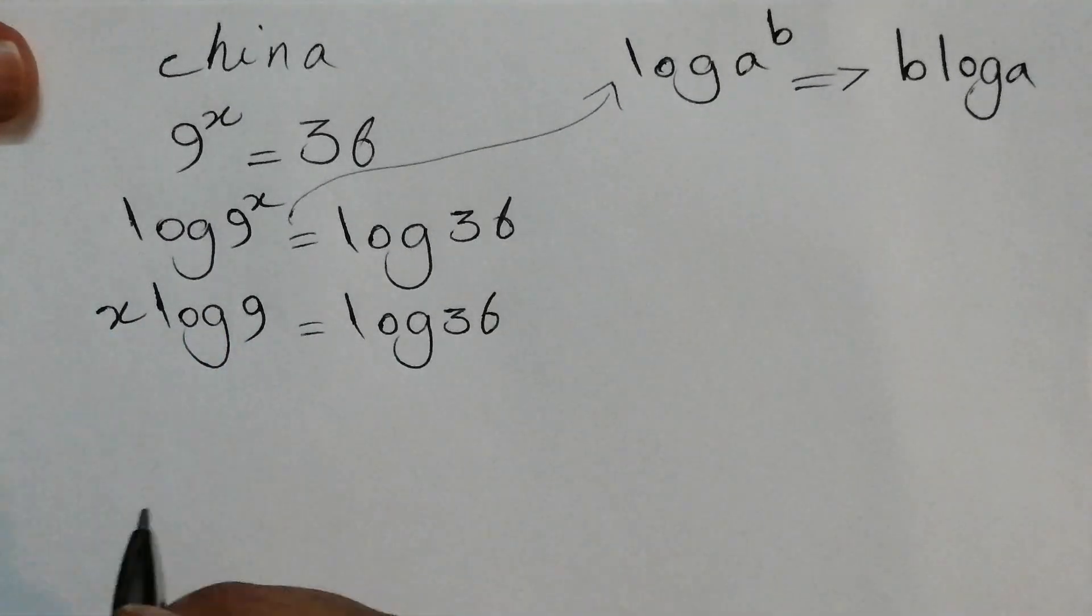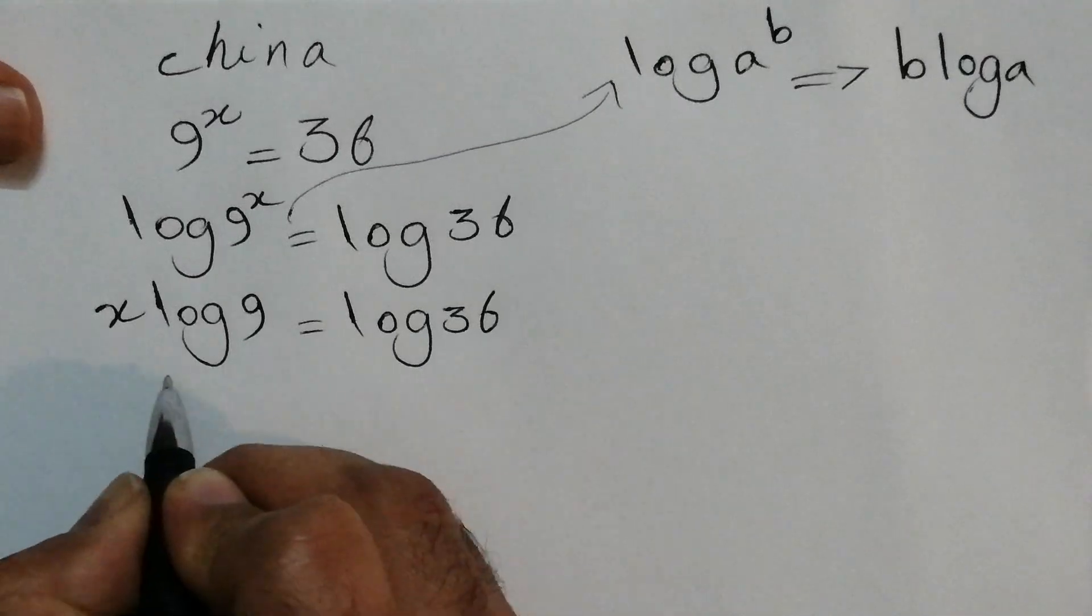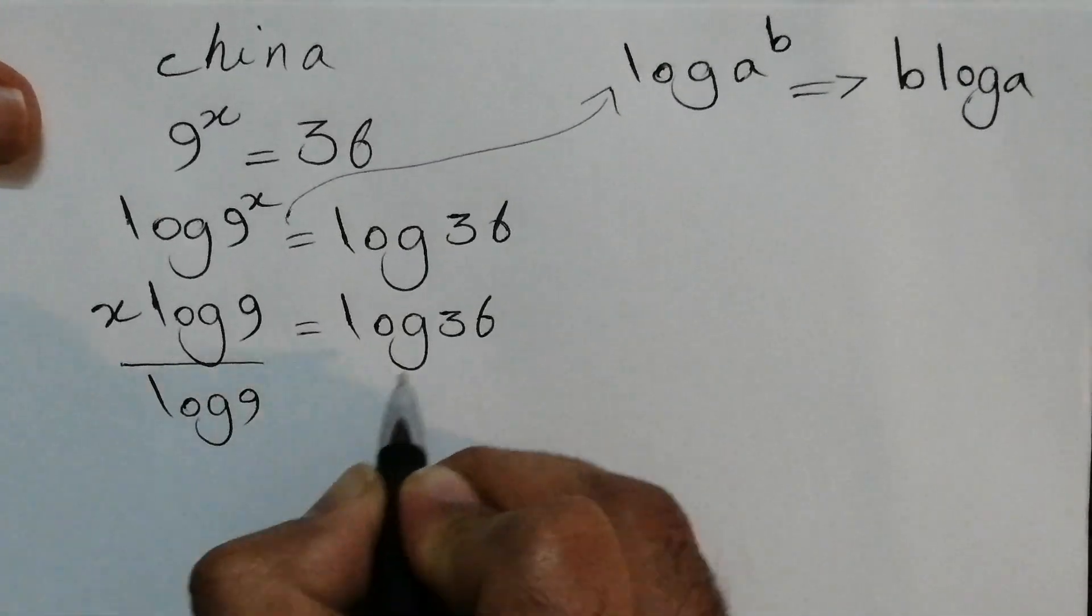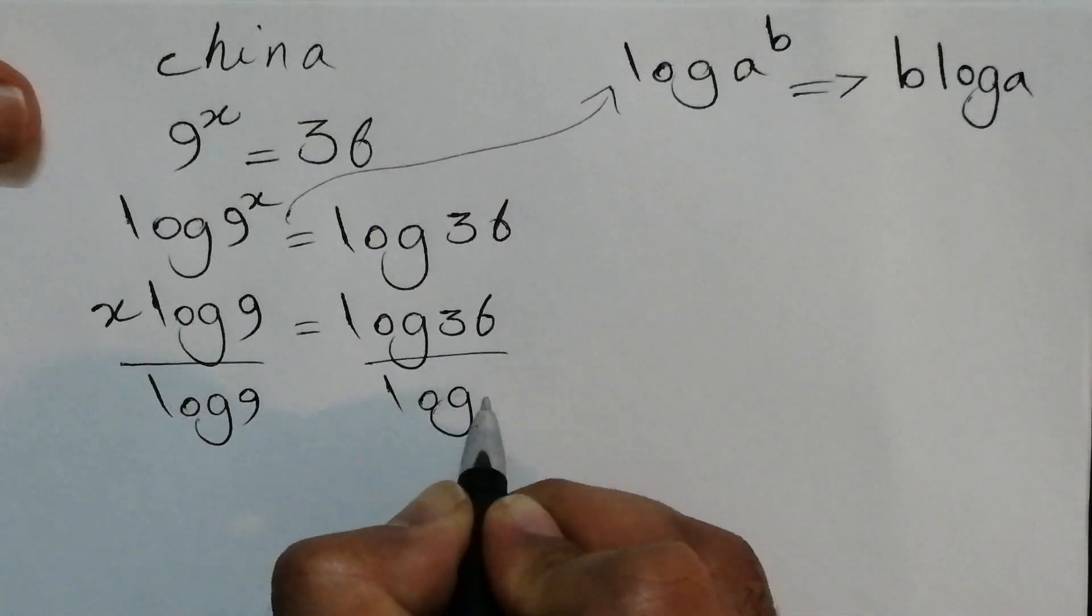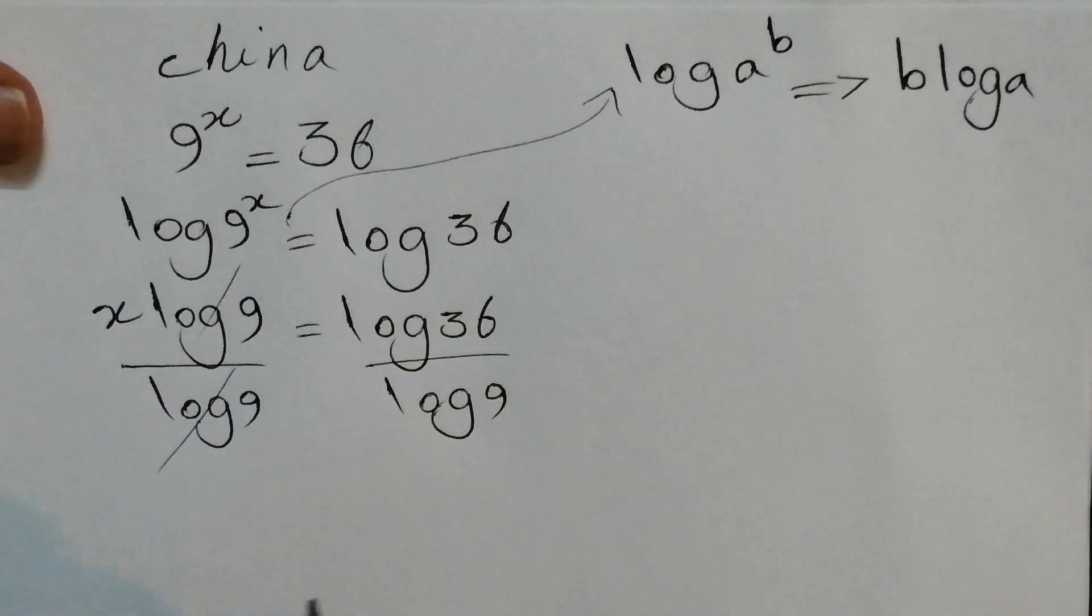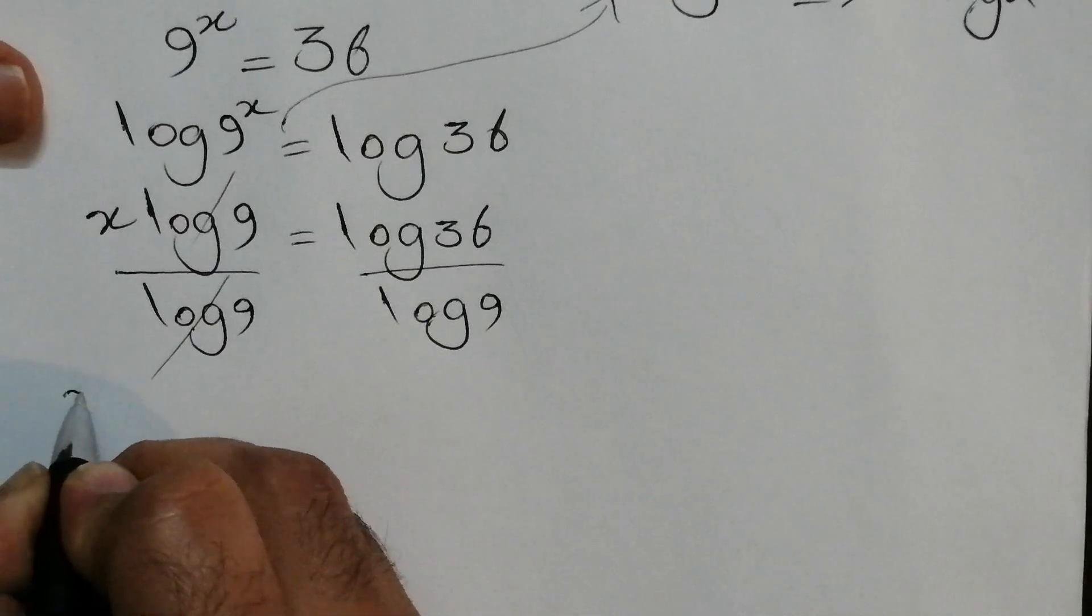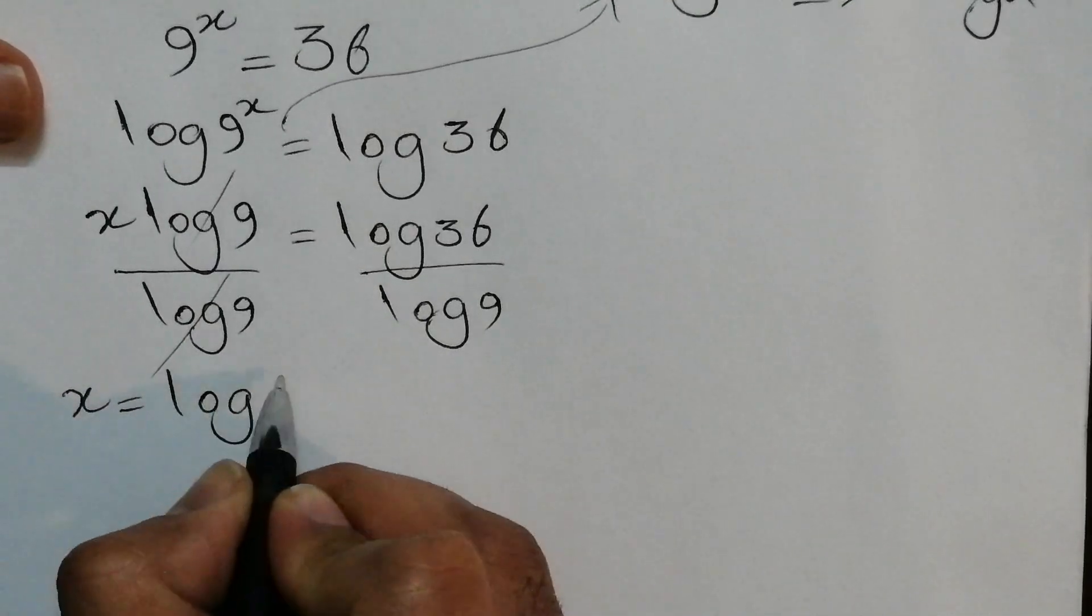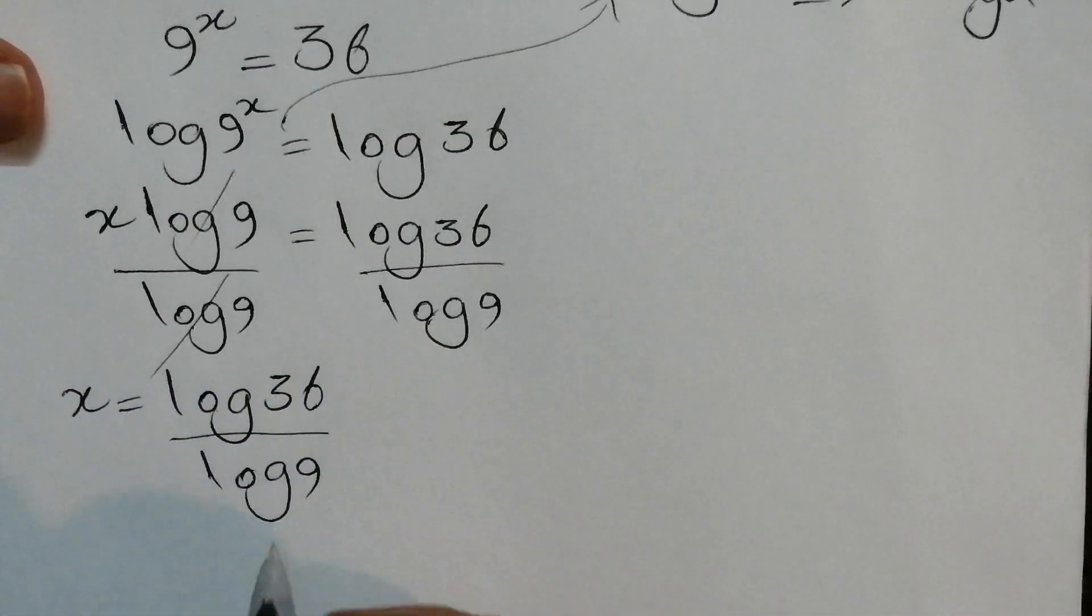What's next? We divide both sides by log 9. So here is the fraction. These two simplify and cancel one another. Now we can go with the next part, so x equals log 36 over log 9.